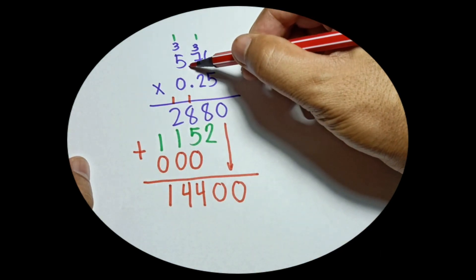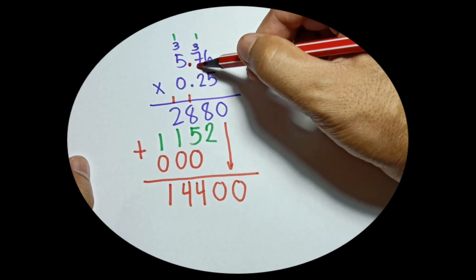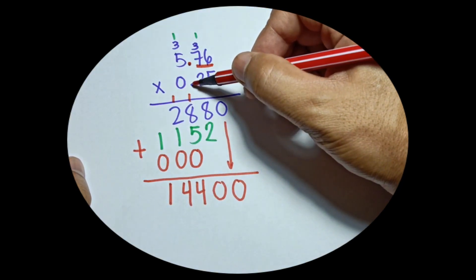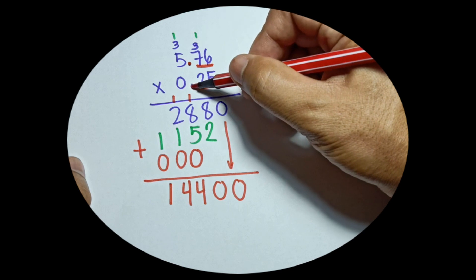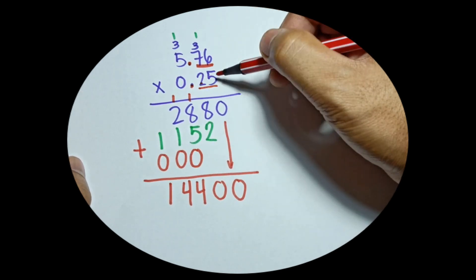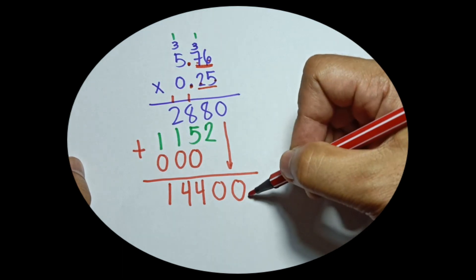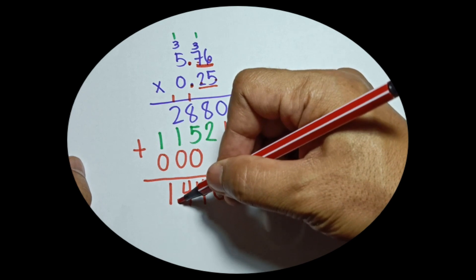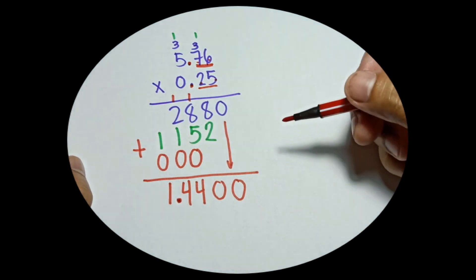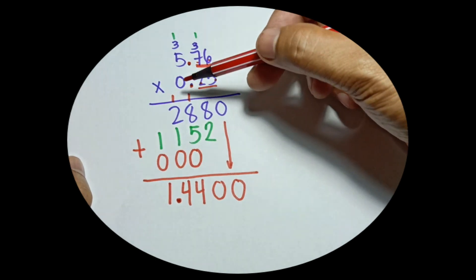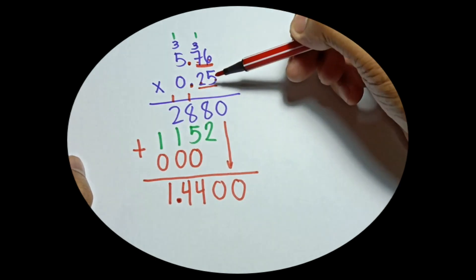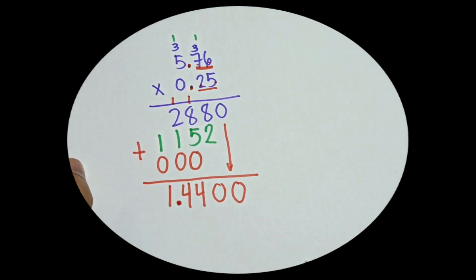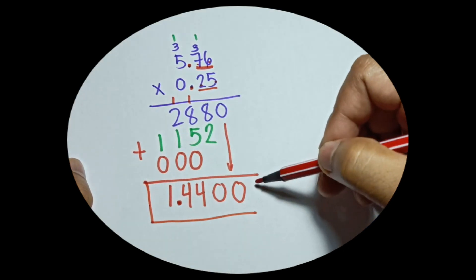Count all the decimal places: 1, 2, 3, 4. So you count 4 places from the right: 1, 2, 3, 4 — and place your decimal there. The answer when you multiply 5.76 by 0.25 is 1.4400.